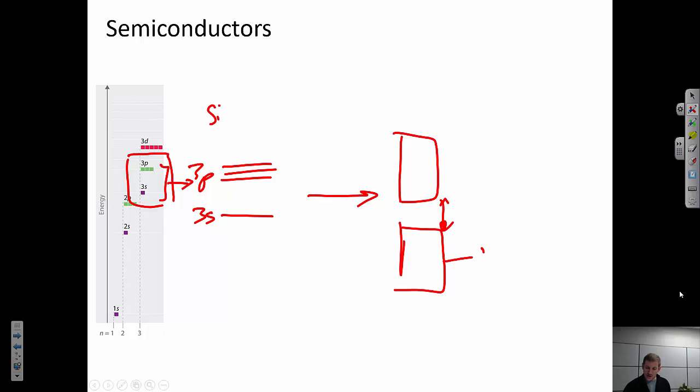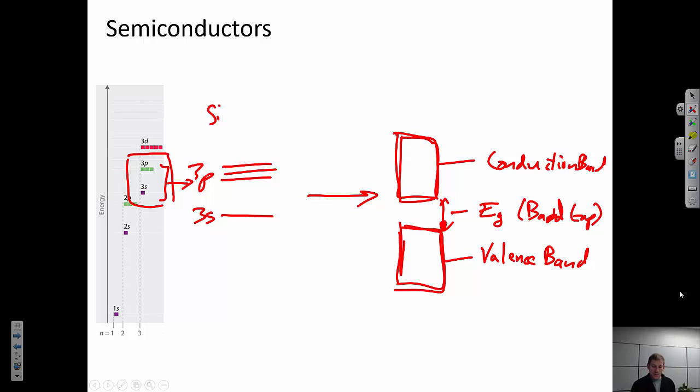In a semiconductor, I would call this the valence band. I would call this the band gap, and oftentimes we abbreviate that E sub G, band gap, and I would call this the conduction band. And we get this separation between these two bands because I'm combining two different kinds of orbitals. And they're interacting, and they're mixing, and they lead to two continuums, two bands, and a gap in between.